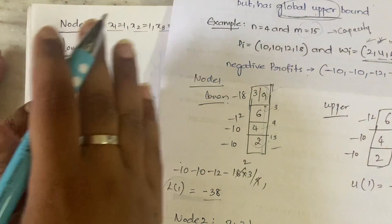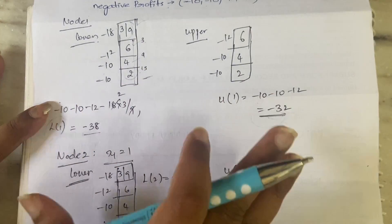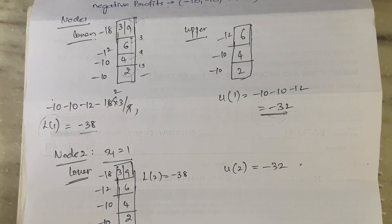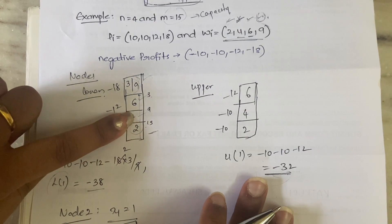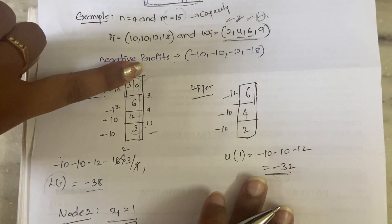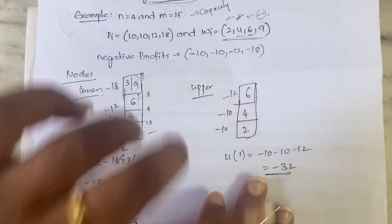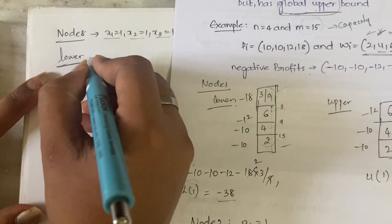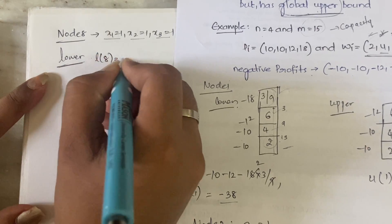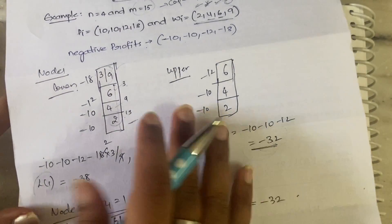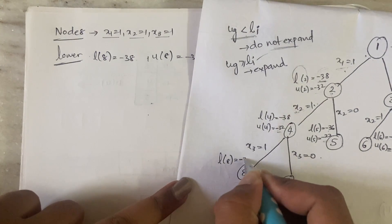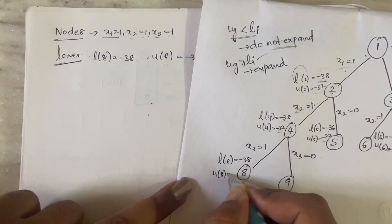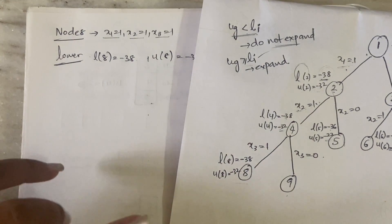In an exam I suggest you to calculate lower bound and upper bound again, but you can just copy it from the same scenario. The same upper bound and lower bound apply because x1=1, x2=1, x3=1 and if there is more place we are accommodating x4, but fractions are not allowed so we are not taking x4. So lower bound of node 8 will be minus 38 and upper bound of node 8 will be minus 32.